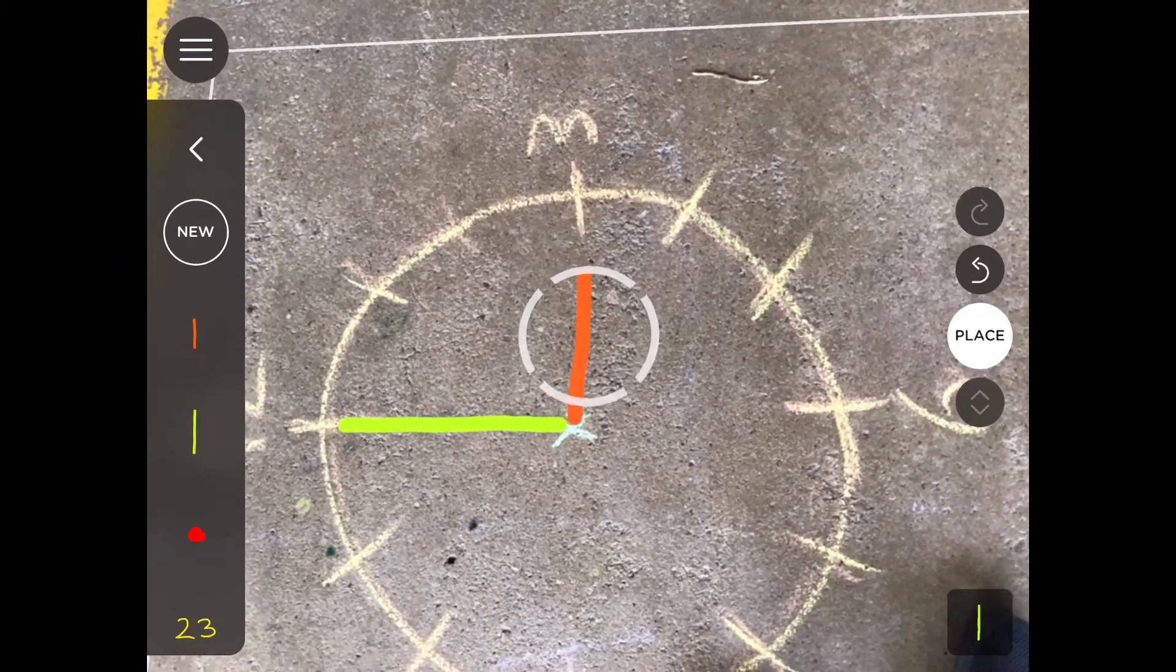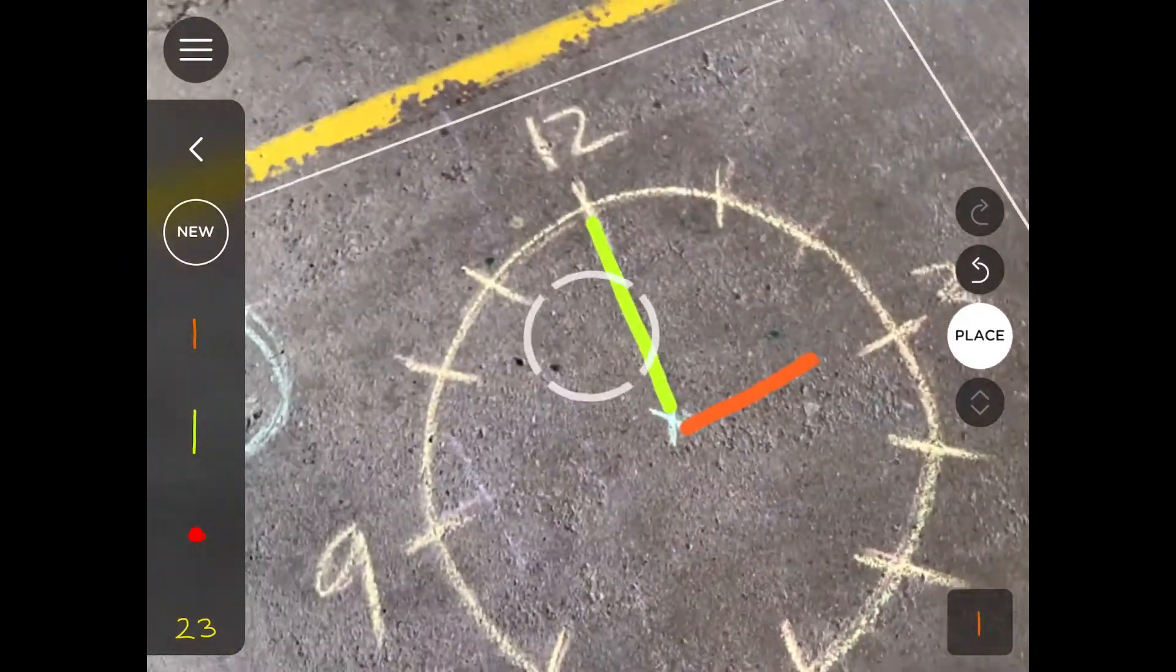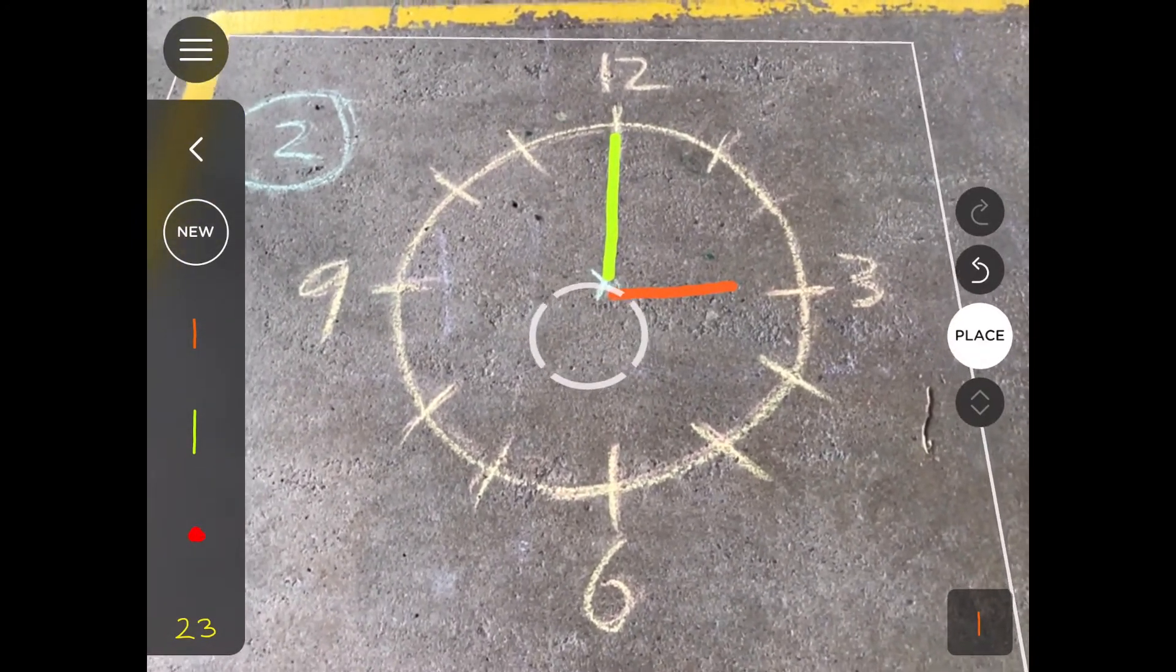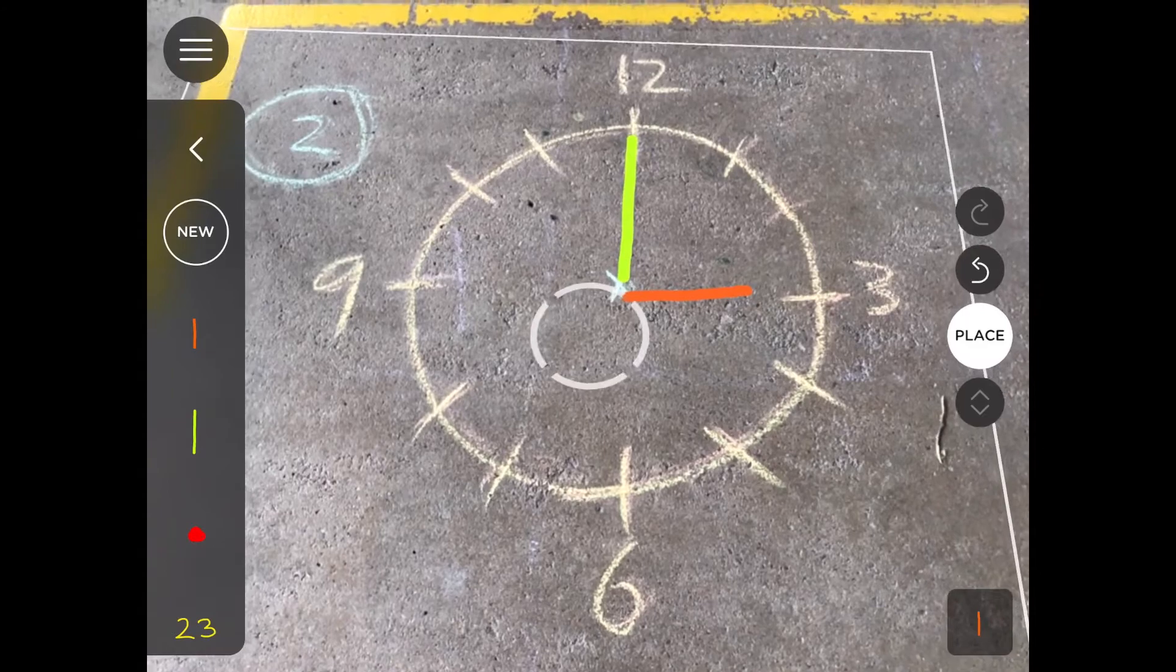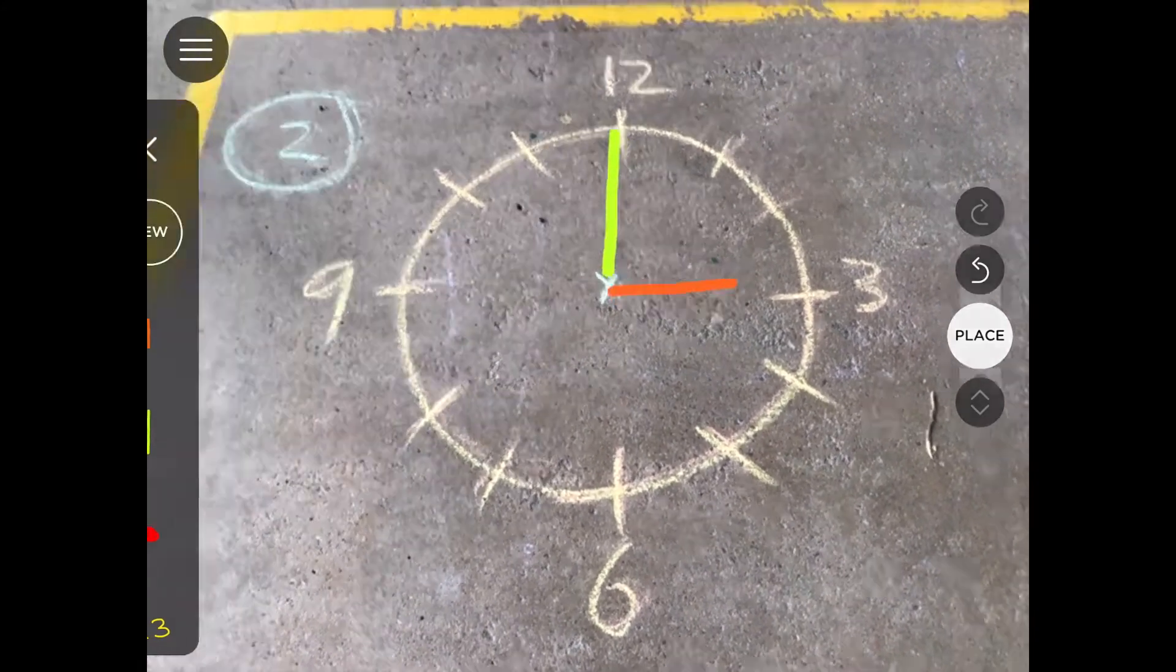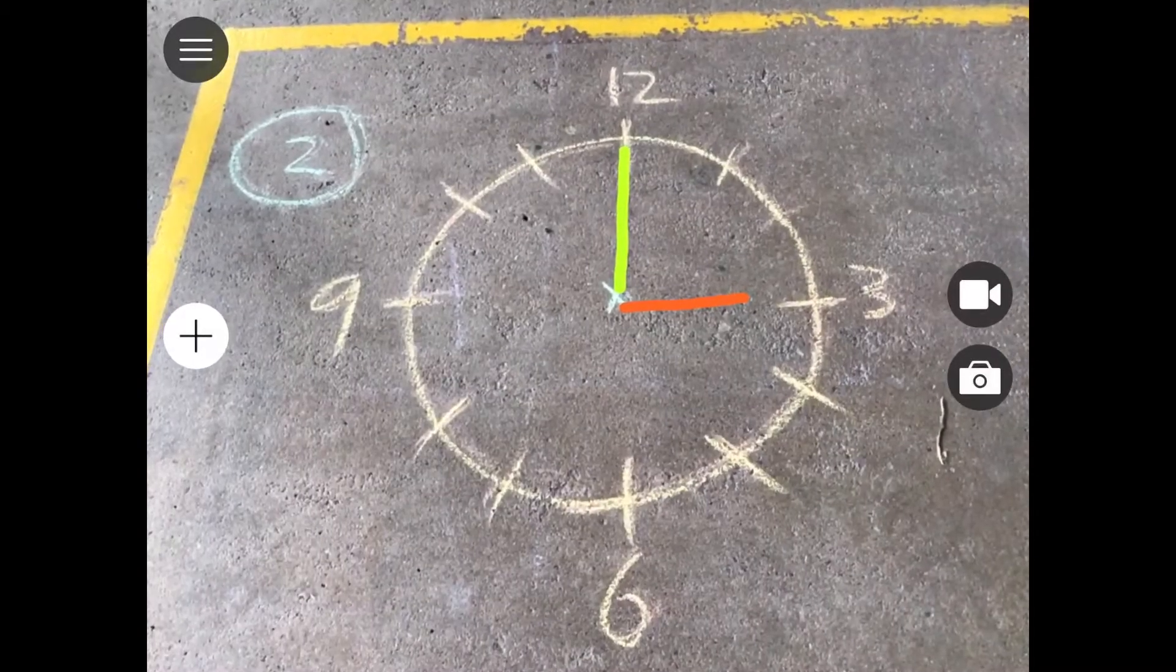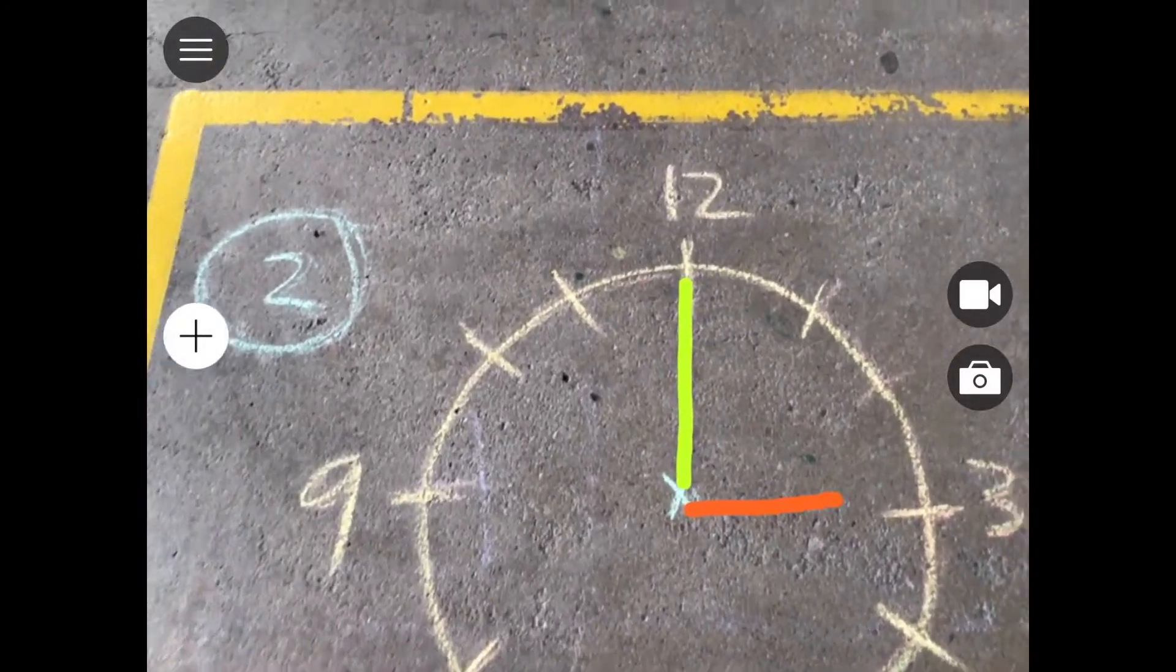There's number three there. Place, and now I've got number three made on my AR clock. So I'm going to push the arrow above the new tab on the left, and now I can take my photo. And now I'm ready to go to the next activity.